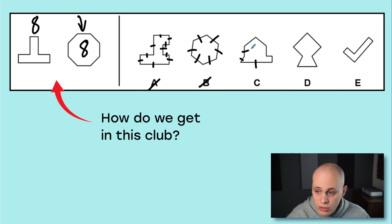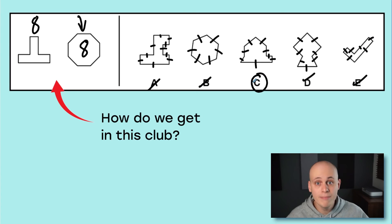What about C? One, two, three, four, five, six, seven, eight. This does seem to fit. So this is my best answer right now. But if I wasn't 100% sure that there weren't any other rules about this club, I would check the other ones too. One, two, three, four, five, six, seven, nope. One, two, three, four, five, six, nope. So C is my best answer and we can move on.